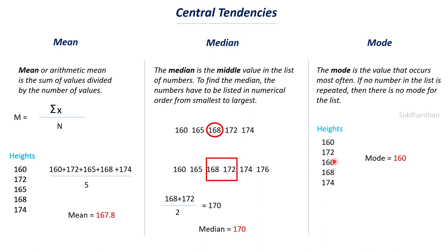To summarize: mean is the average, obtained by adding all data points and dividing by the total count. Median is found by arranging data points in order and finding the middle value. Mode is the most frequently repeated value — if there are no repeated values, there is no mode. Note that mean, median, and mode can sometimes be equal — this commonly happens in a normal distribution or uniform distribution.